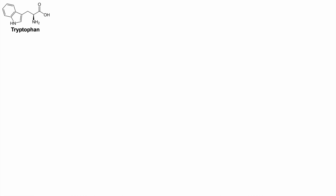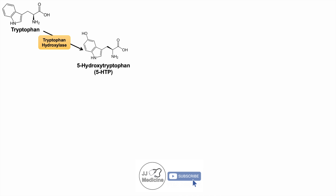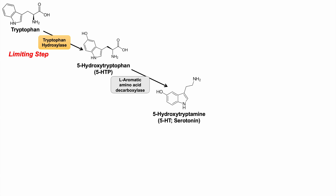The pathophysiology begins with the amino acid tryptophan, which is used to produce serotonin. Tryptophan undergoes enzymatic reaction by tryptophan hydroxylase to form 5-hydroxytryptophan or 5-HTP — this is the rate-limiting step. 5-HTP is then converted by the enzyme L-aromatic amino acid decarboxylase into 5-hydroxytryptamine, which is serotonin (5-HT).